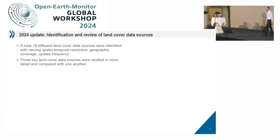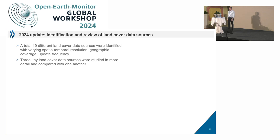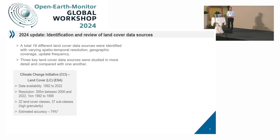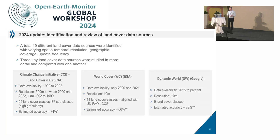In this piece of work we looked at 19 different land cover data sources that are available — this is not finite, there's probably more. We really wanted to look at different aspects of these to determine which one would be best suitable for creating these indicators. There are three data sources that we looked at in more detail: the Climate Change Initiative land cover dataset, WorldCover, and Dynamic World. And these three data sources are really very different.